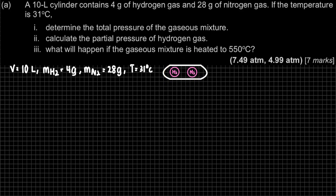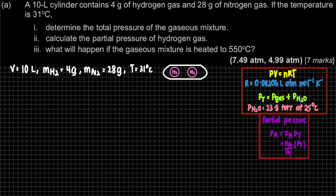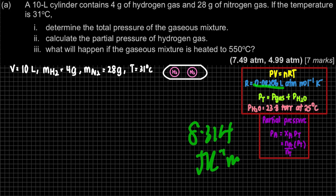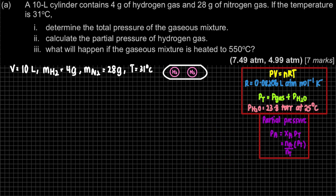For section 5.1, there are formulas you have to memorize. The first formula is PV = nRT: P is pressure, V is volume, n is number of moles, and R is your gas constant. If you refer to the list of constants, there are two values for R - 0.0806 and 8.314 J/K/mol. For our chapter 5 syllabus, we use 0.0806 L·atm/mol·K because we are working with liters, atm, pressure, and volume.